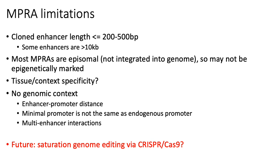MPRAs have a number of limitations. First, the enhancer sequences are initially synthesized on microarrays, and the maximum length of these synthesized sequences is usually somewhere between 200 and maybe up to 500 base pairs. This is a problem because some enhancers can go up to say 10 KB or longer, so if you can only clone in a short fragment of the full-length enhancer, you could be missing a lot of interactions between different parts of your enhancer sequence inside your MPRA assay.